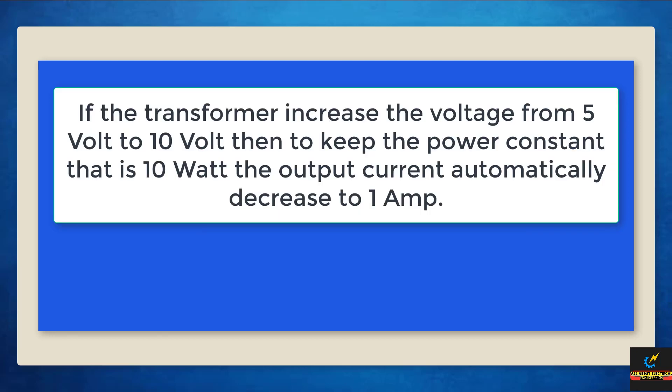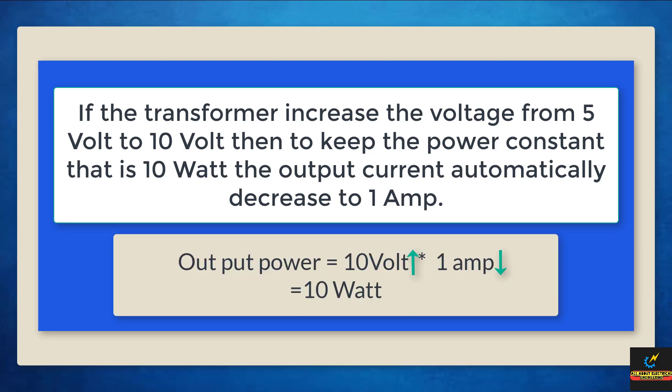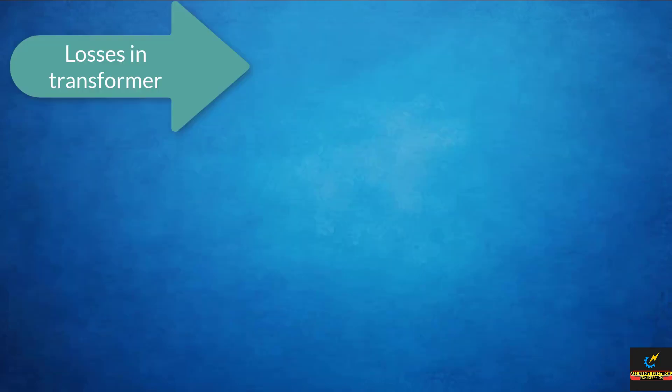Now, if the transformer increases the voltage from 5V to 10V, then to keep the power constant at 10W, the output current automatically decreases to 1A. So the output power is also 10W. In other words, the voltage is stepped up but current is stepped down.